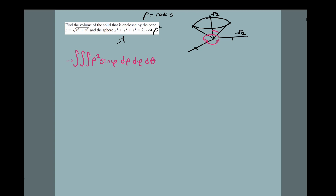Now let's find our limits of integration for dρ. We always start from the origin — this entire surface is centered there. Extending outward, our radius is always √2, so ρ goes from 0 to √2. That is the radius of our sphere.